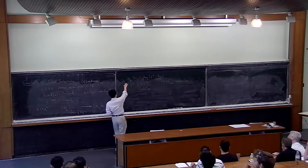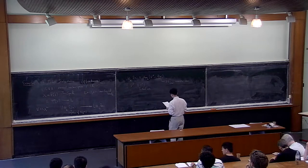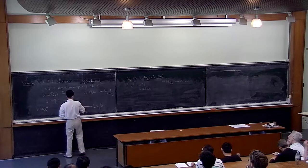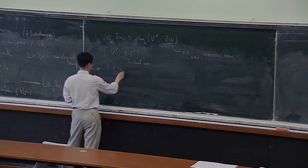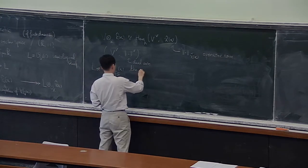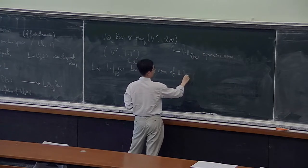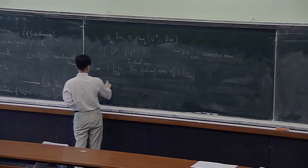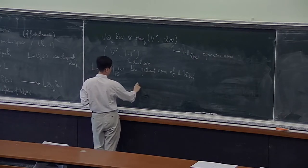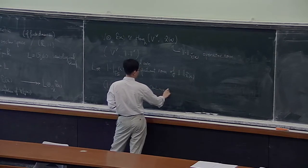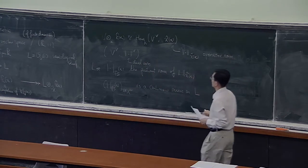Vous avez une norme sur cet espace, et vous pouvez montrer que cette norme prolonge la norme initiale sur V. Si vous considérez V comme un sous-ensemble qui envoie un point vers le point tensorisé par 1, vous avez une norme sur cet espace, et vous pouvez prendre la norme au quotient. On va noter fs(x) la norme au quotient. Dans ce cas, vous trouvez une famille qui est une métrique, appelée métrique de Fubini-Study. Vous pouvez même montrer que c'est une métrique continue.